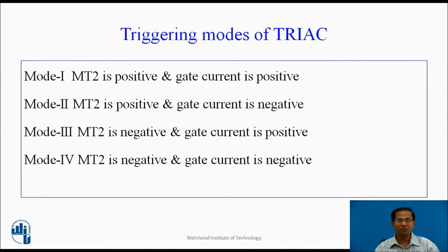Triggering modes of Triac. Mode 1: MT2 is positive, gate current is positive. Mode 2: MT2 positive, gate current negative. Mode 3: MT2 is negative, gate current is positive. Mode 4: MT2 is negative, gate current is negative.